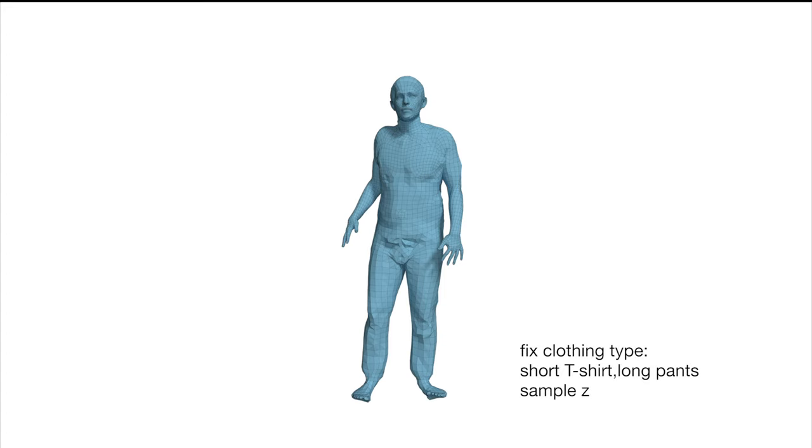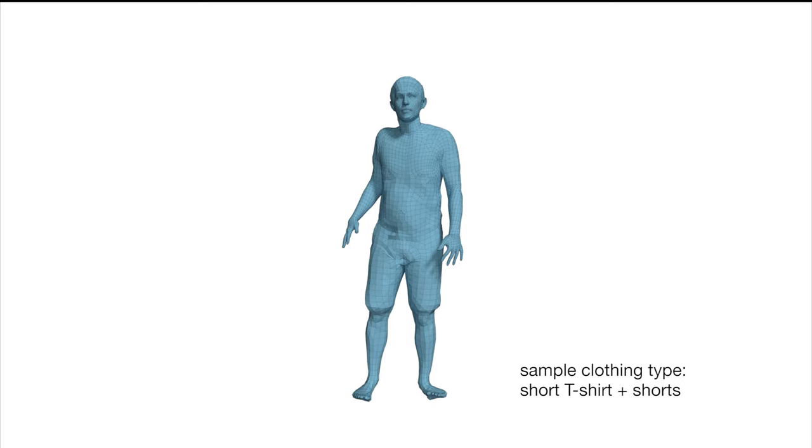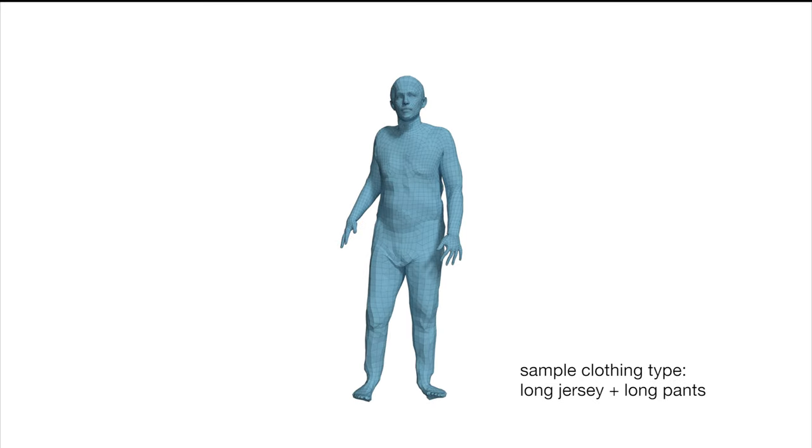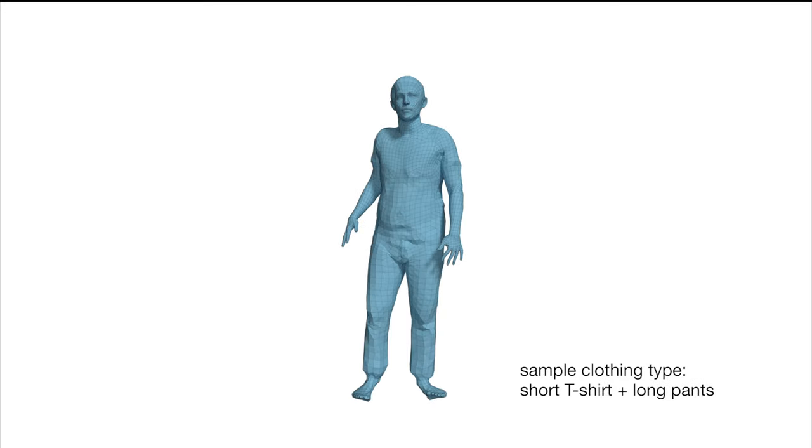The trained CAPE model has a wide range of applications. Since CAPE is a probabilistic model, we can draw random samples from the learned latent space to generate clothed bodies under different conditions. Given a pose and clothing type, we can sample the Z variable to get different clothing structures and shapes. We can also fix the Z variable and pose, and compute outfits of different types but with a similar style.